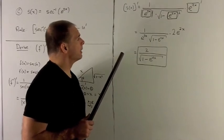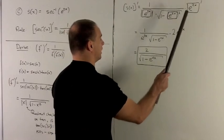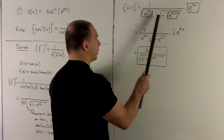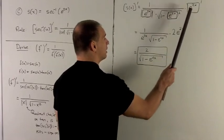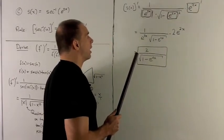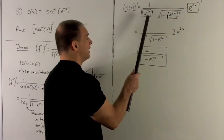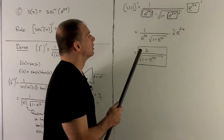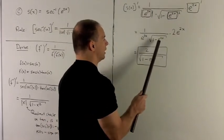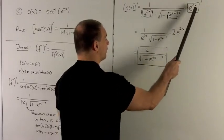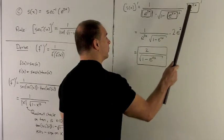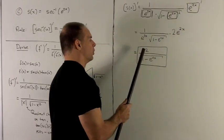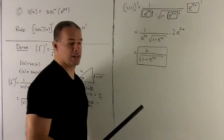We go to s prime. Drawing boxes in the formula where we substitute e to the 2x, we have 1 over the absolute value of the inside times radical 1 minus the inside squared, times the derivative of the inside. Since e to the 2x is always positive, we can drop the absolute value signs. Squaring e to the 2x gives e to the 4x. The derivative of e to the 2x throws out a factor of 2, leaving us with 2 over radical 1 minus e to the 4x.